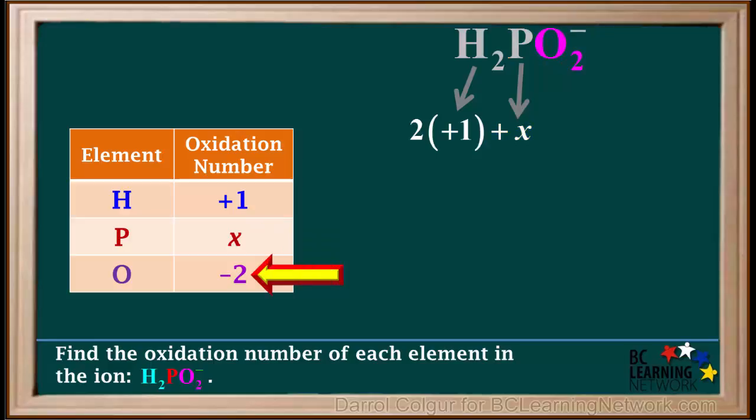The oxidation number of an oxygen atom is negative 2. So, the total charge on two oxygen atoms is 2 times negative 2.